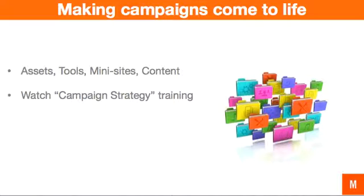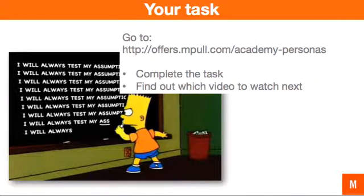The next step for you is to watch our training on campaign strategy, which shows you how to take a campaign and develop the different buying stages and content that supports it. To test what we've told you today, go to office.emple.com/academy-personas, fill out the form and we'll send you a task to complete. You can also identify which video to watch next — the campaign strategy video. Thanks so much for attending the training today.